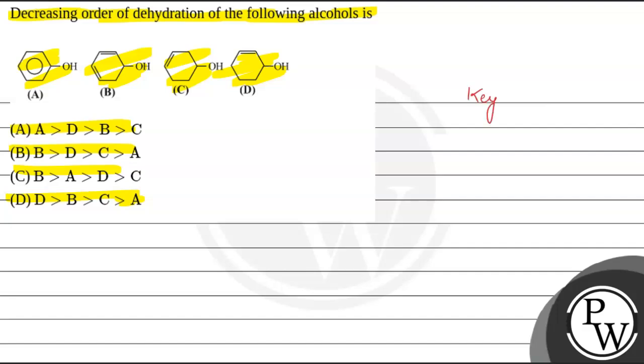If we start with the key concept, the key concept involved in this question is dehydration of alcohol. So usually when we do dehydration of alcohol, a water molecule will be removed, which will lead to the formation of a corresponding alkene.